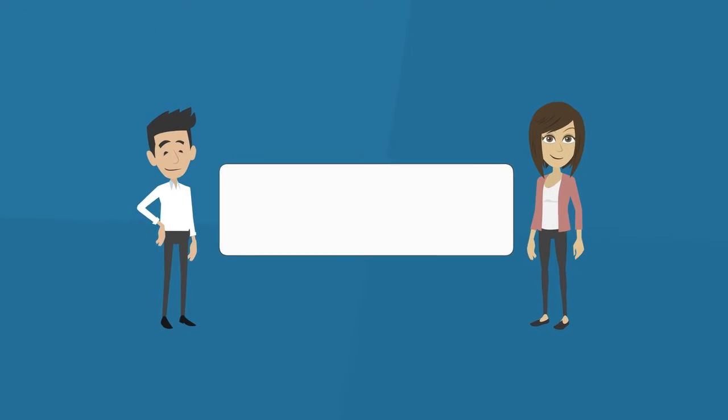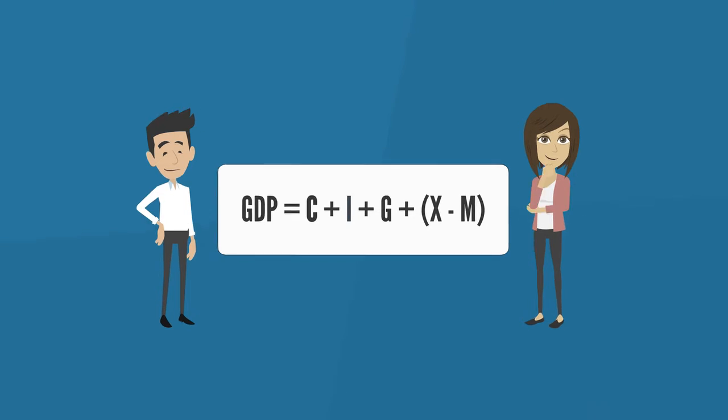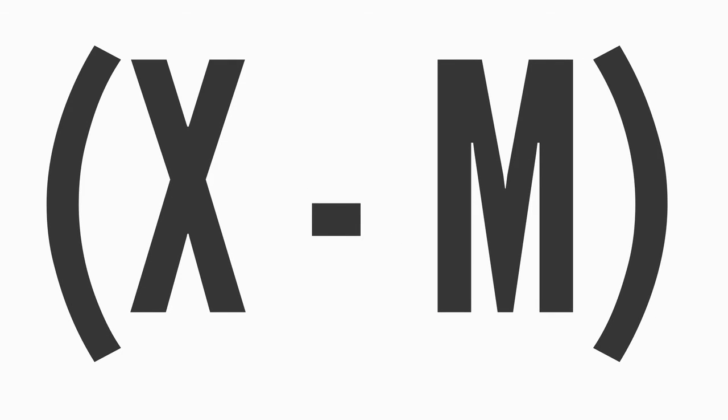Let's go back to our equation. GDP equals C plus I plus G plus the sum of X minus M. Now let's focus on the last part of the equation, X minus M.